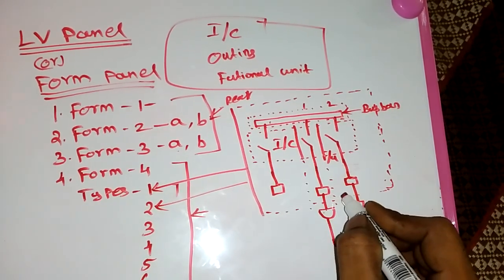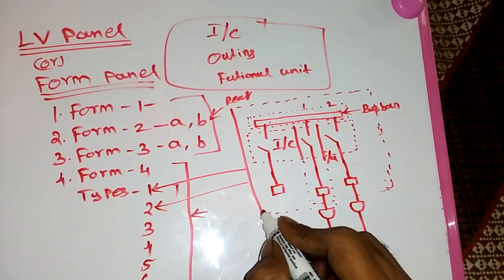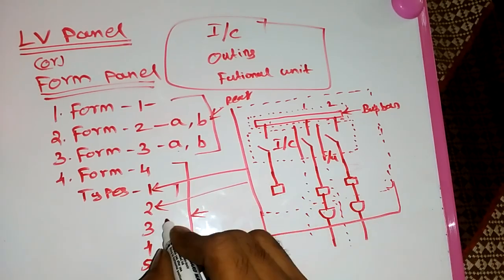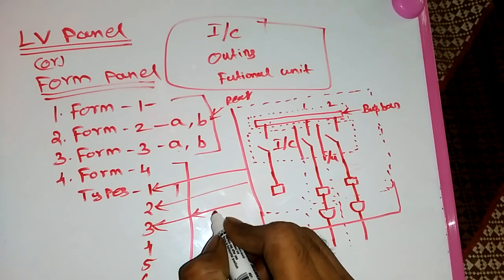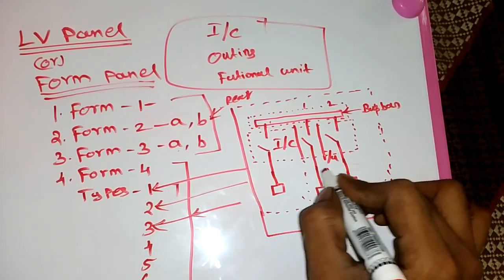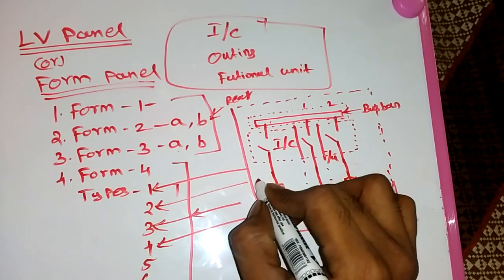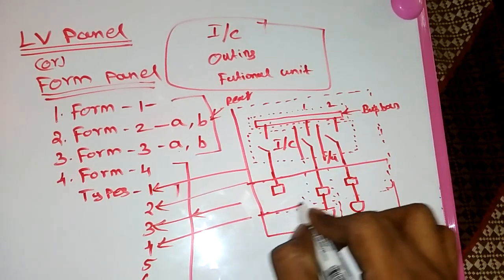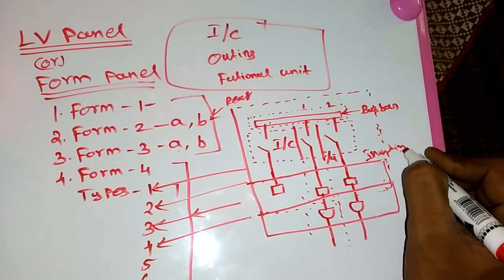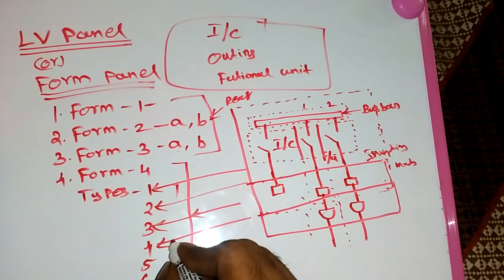If we use metallic or non-metallic material to separate each functional unit, this is called Form 4 Type 2. In Type 3, same as before — separation using metallic or non-metallic — but we also use glands for some separations. That's called Form 4 Type 3. In Form 4 Type 4, we do not separate external terminals in Type 3, but in Form 4 Type 4 we also separate the external terminals, using insulating covers, while compartment parts are separated by metallic or non-metallic material.